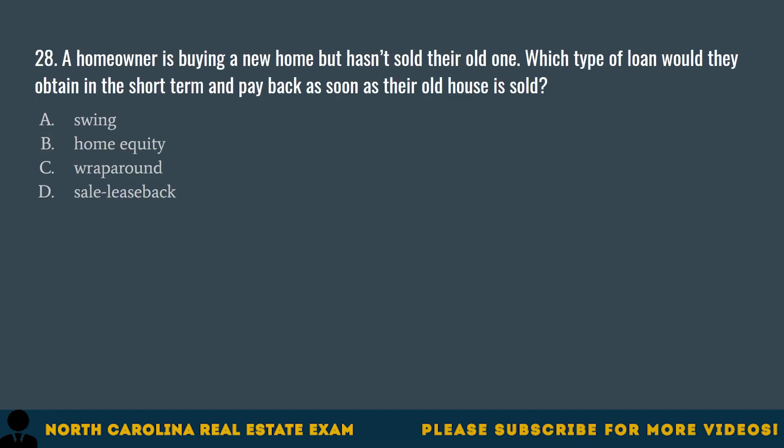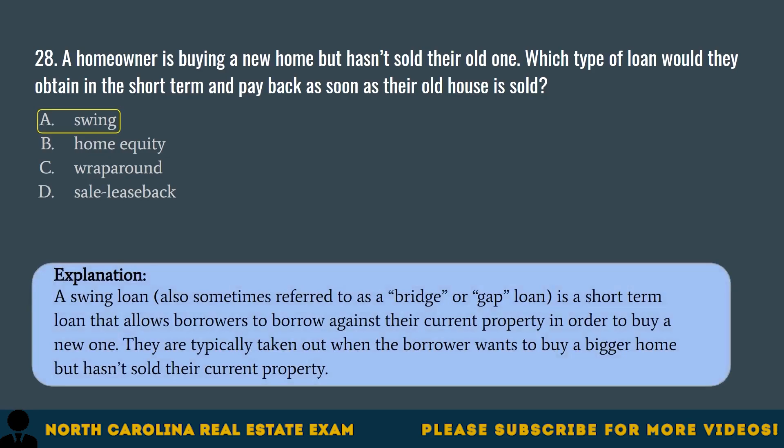Question 28. A homeowner is buying a new home but hasn't sold their old one. Which type of loan would they obtain in the short term and pay back as soon as their old house is sold? A. Swing. B. Home equity. C. Wrap around. D. Sale lease back. The correct answer is A. Swing. A swing loan, also sometimes referred to as a bridge or gap loan, is a short-term loan that allows borrowers to borrow against their current property in order to buy a new one. They are typically taken out when the borrower wants to buy a bigger home but hasn't sold their current property.